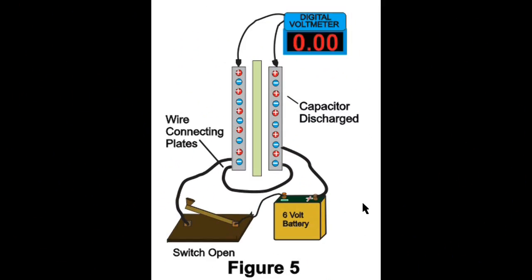Now getting back to the drawings. The only difference between figure 5 and the last drawing, figure 4, is that this drawing shows a wire connected between the two plates of the capacitor. Now the electrons in the left plate move through the wire to the right plate, which removes the excess positive charge on the right plate, since there is the same number of positive and negative charges on the right plate.